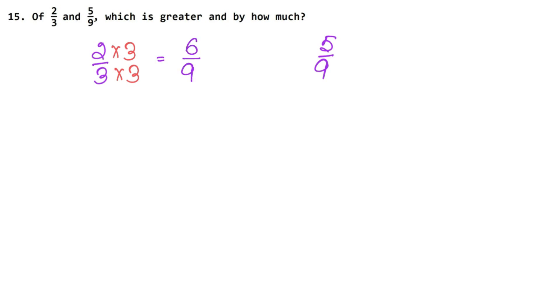Now the denominators are the same. Let us see the numerator. If we look at the numerator, then this is bigger. So, we got to know that 2 upon 3 is bigger than 5 upon 9. How much will this be?